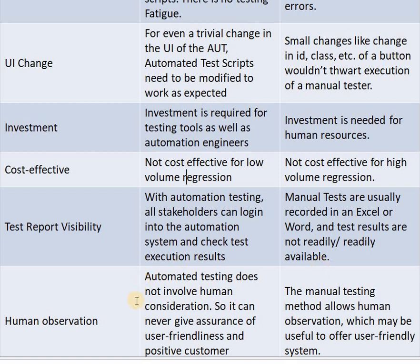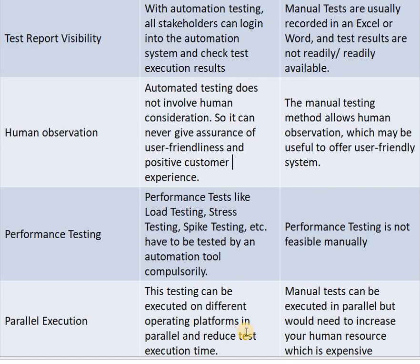Next parameter is human observation. In automated testing, it does not involve human considerations, so it can never give assurance of user-friendliness and positive customer experiences. But in manual testing, human observation allows testers to offer a more user-friendly system. So manual testing is more user-friendly as compared to automation testing.